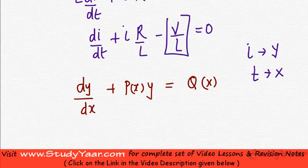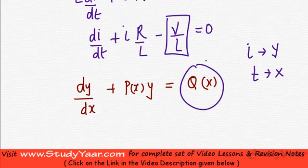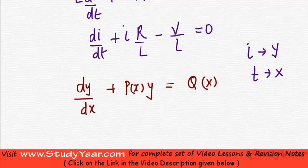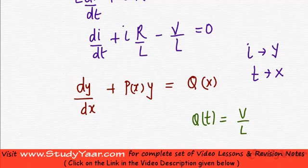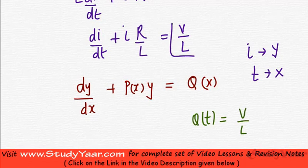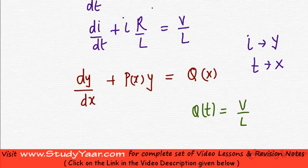So what you get is V by L is your q of x, or rather q of t. So my q of t in this case is V by L. Let's write it like this. I would take this V by L over here, so what I would get is equal to V by L. So now it is very obvious that q of t is V by L and P of t is R by L.